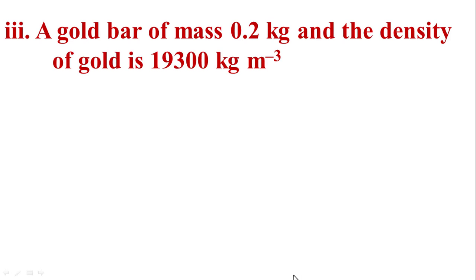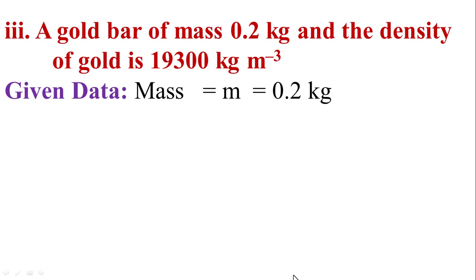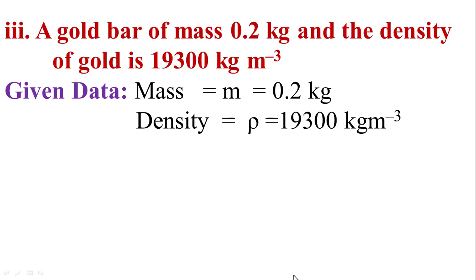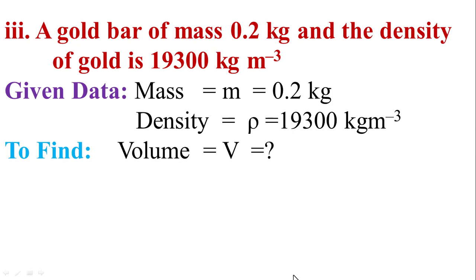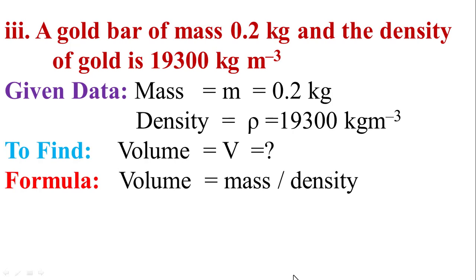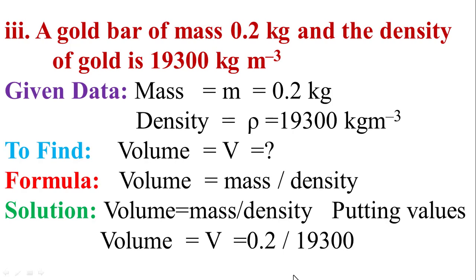In the last part: a gold bar of mass 0.2 kg and the density of gold is 19300 kg per m³. Given: mass M = 0.2 kg, density = 19300 kg/m³. Formula: volume = mass divided by density. Putting the values: V = 0.2 divided by 19300. The final answer is volume = 1.04 × 10⁻⁵ m³.